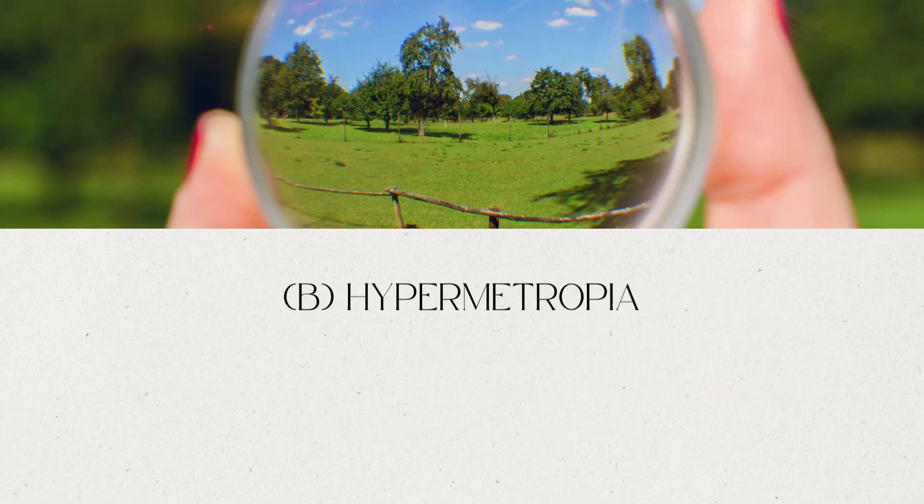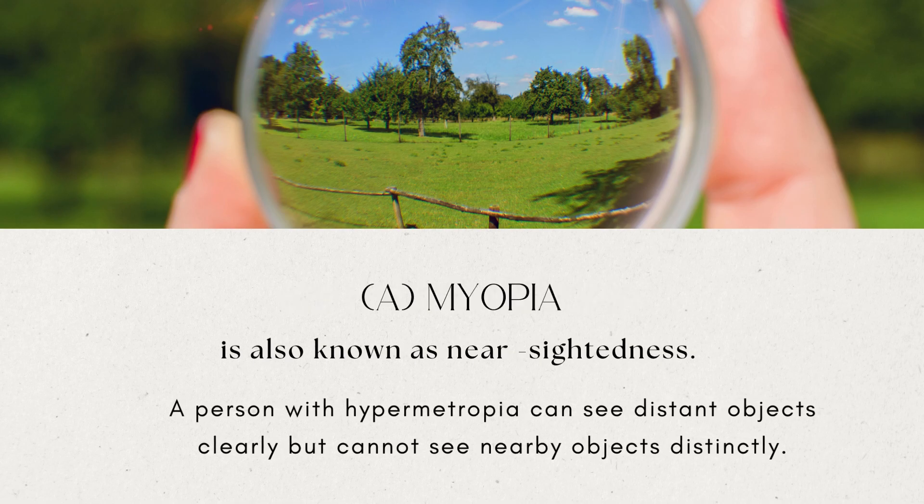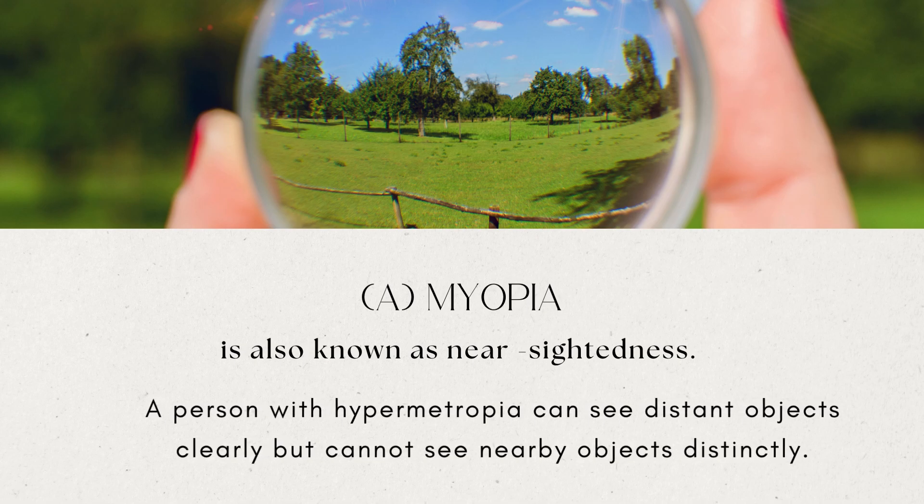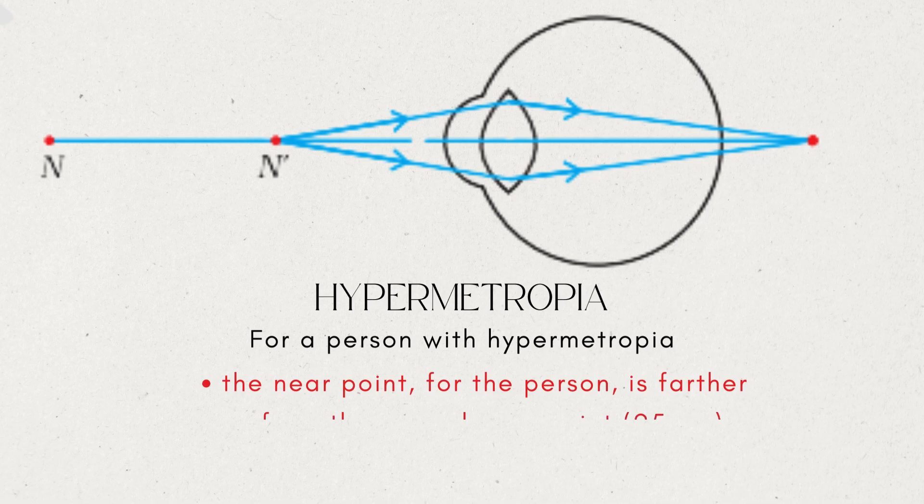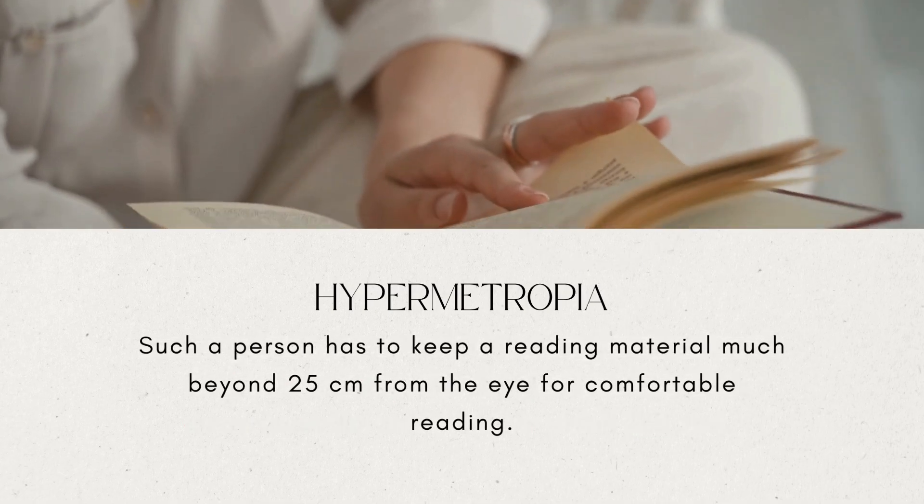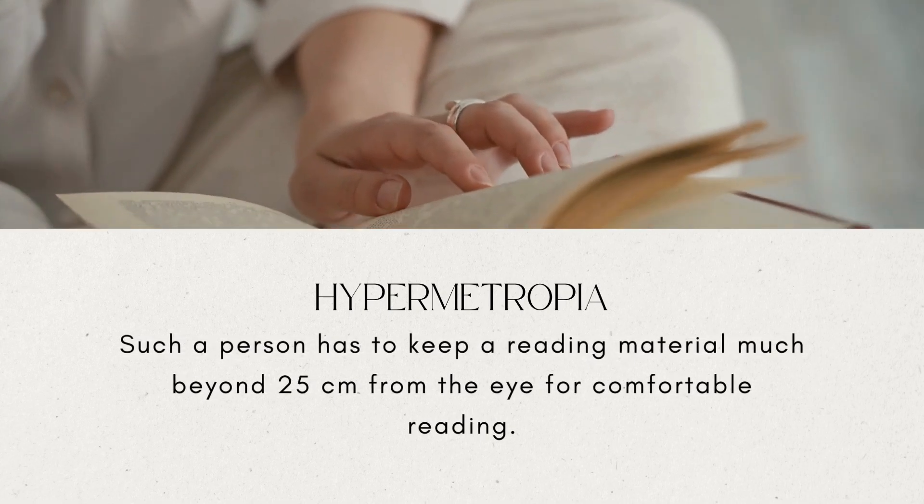Next is hypermetropia, also known as farsightedness. A person with hypermetropia can see distant objects clearly but cannot see nearby objects distinctly. The near point for the person is farther away from the normal near point of 25 cm. Such a person has to keep reading material much beyond 25 cm from the eye for comfortable reading.